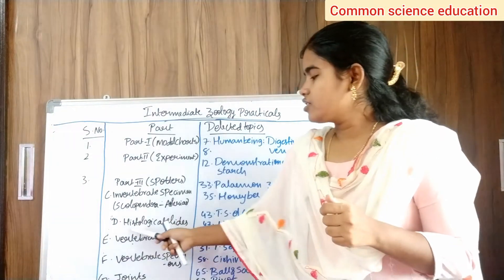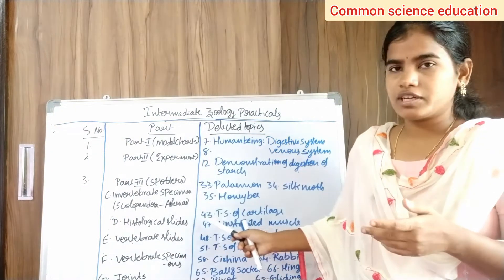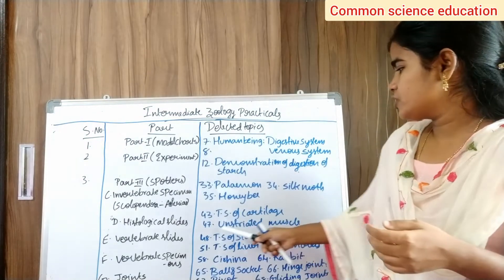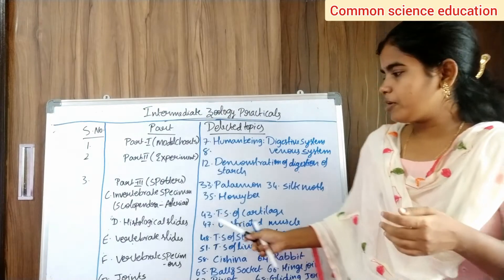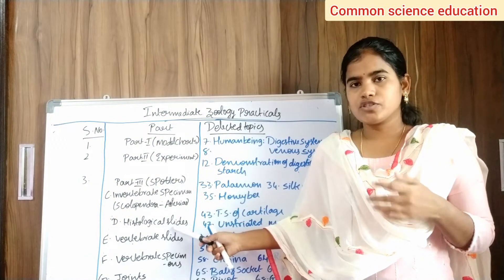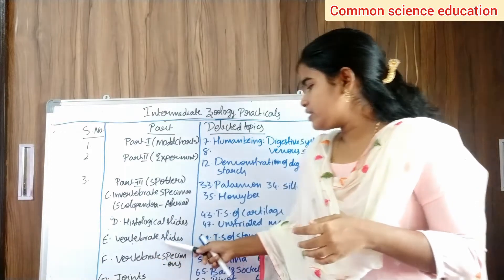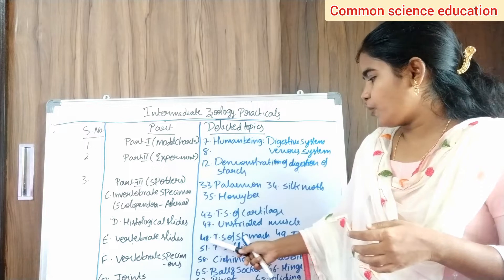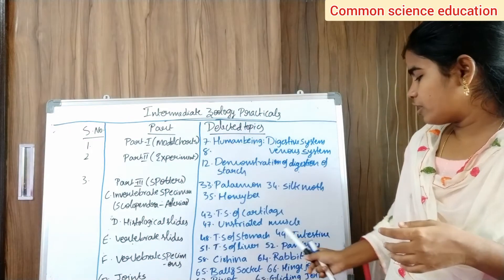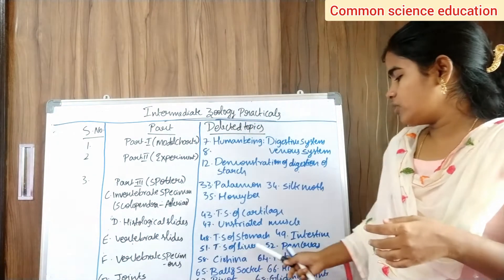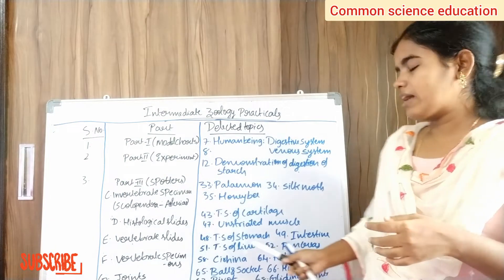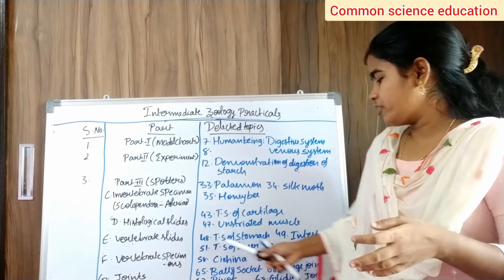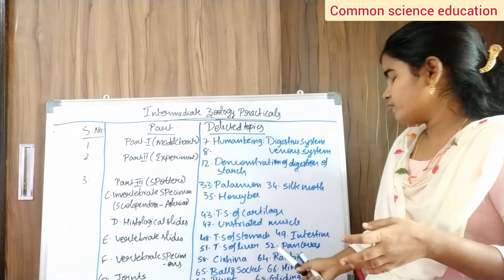Next, category D — histological slides. Draw diagrams of cartilage and unstriated muscles — these two diagrams. Category E — vertebrate slides: tears of stomach (48), tears of intestine (49), tears of liver (51), and tears of pancreas (52) — all digestive system related. Draw diagrams for vertebrate slide numbers 48, 49, 51, and 52.